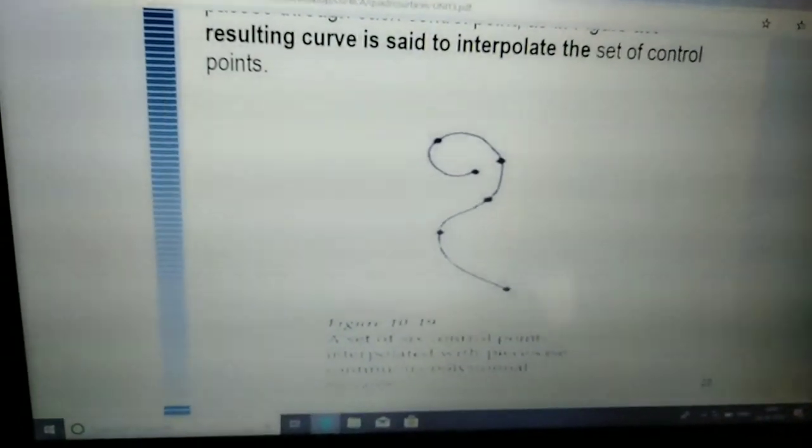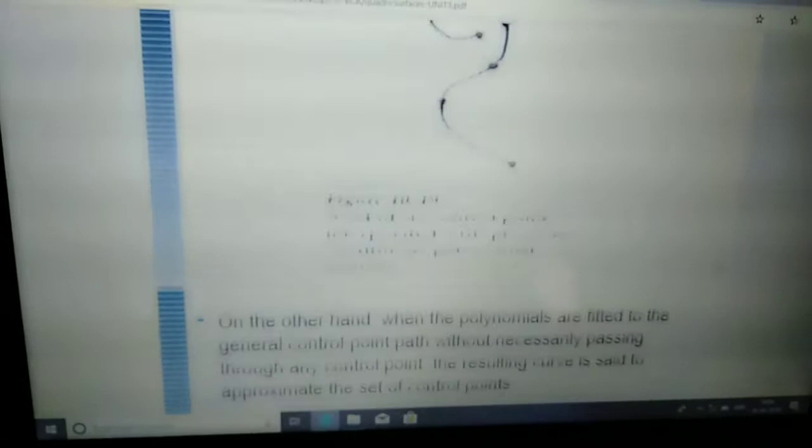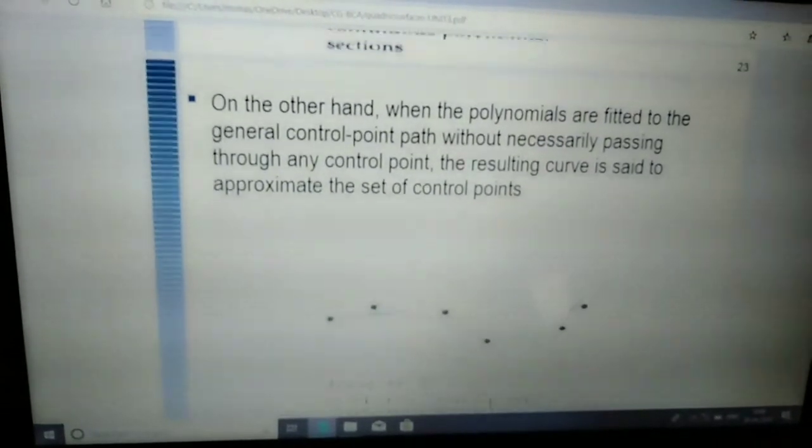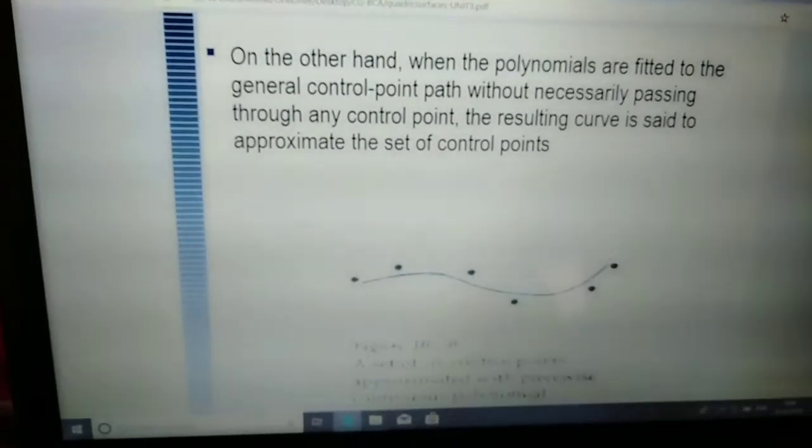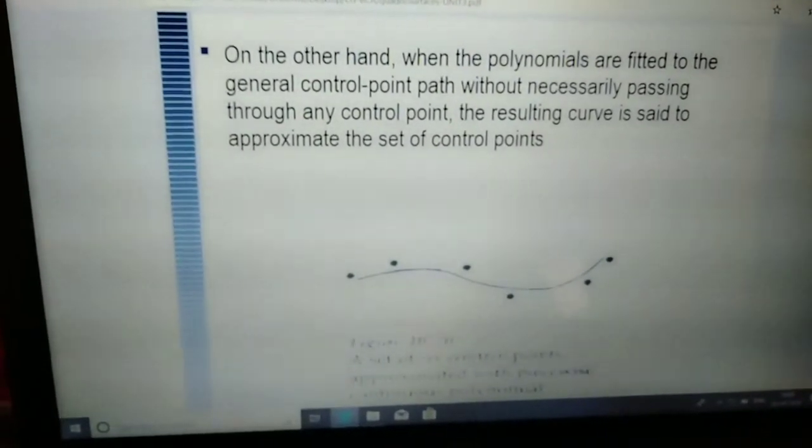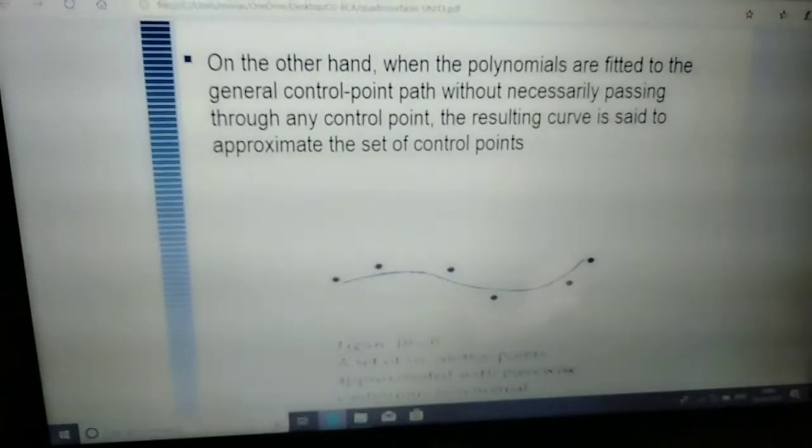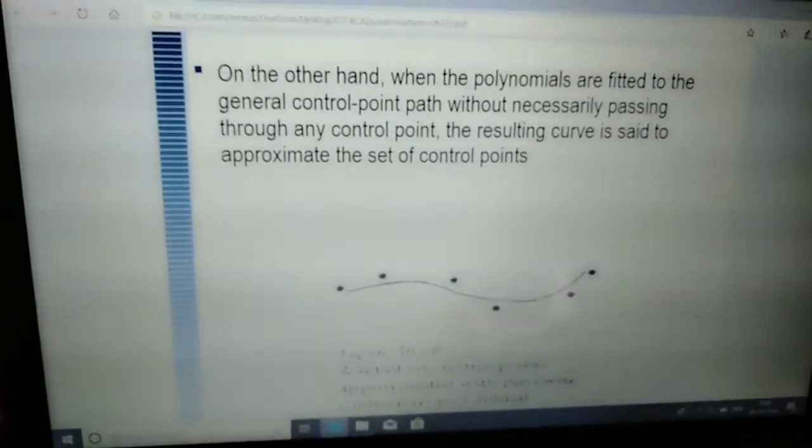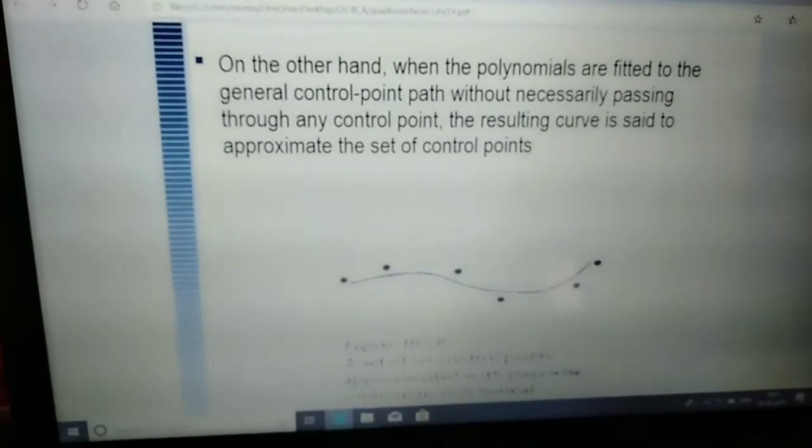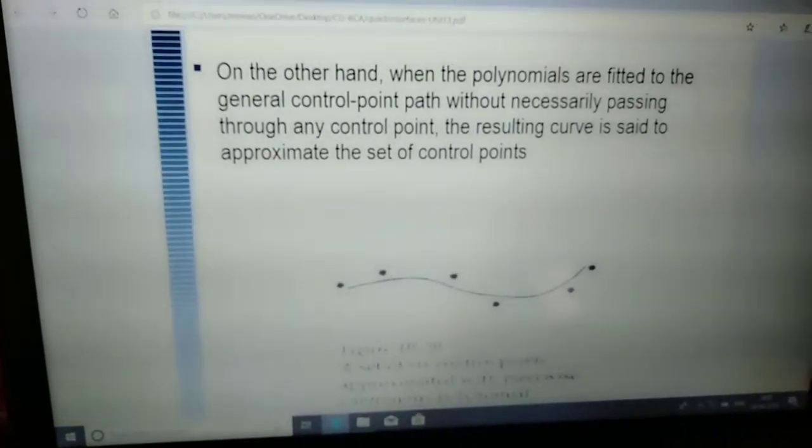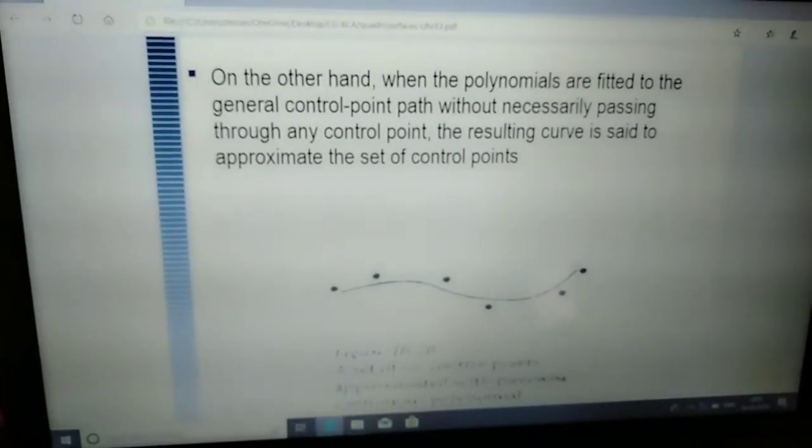On the other hand, when the polynomials are fitted to the general control point path without necessarily passing through any control point, the resulting curve is said to approximate the set of control points. In this approximated spline, the curve is a flexible strip and the control points are either above or below the line.